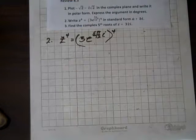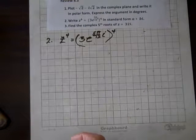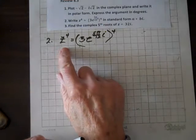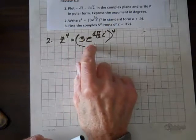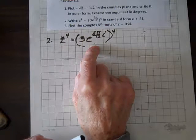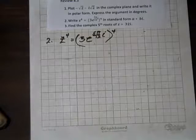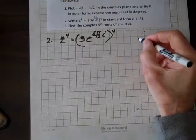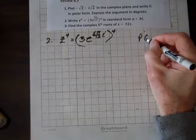So for question 2, we're going to use De Moivre's theorem to write z to the fourth in standard form. And by the way, that's on page 613.